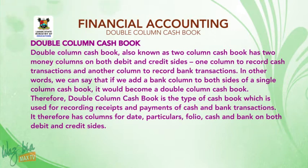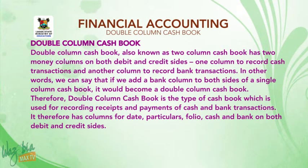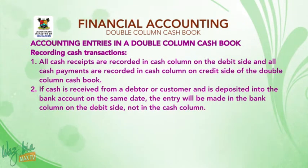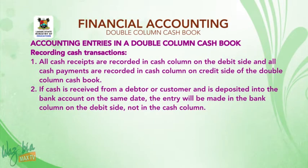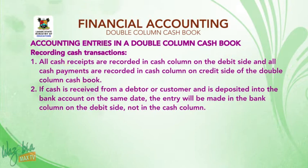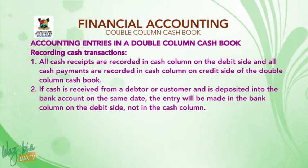It has columns for date, particulars, folio, cash, and bank on both debit and credit sides. Now let's look at accounting entries in a double-column cashbook — recording cash transactions and recording bank transactions. All cash receipts are recorded in the cash column on the debit side, and all cash payments are recorded in the cash column on the credit side of the double-column cashbook.